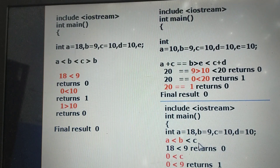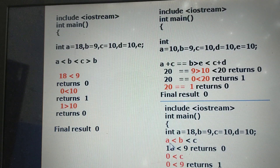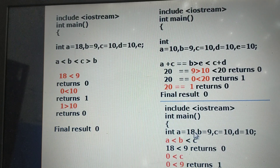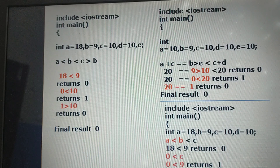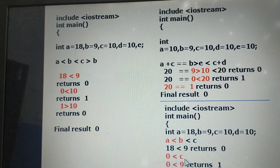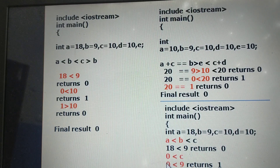Let us discuss one more program with relational operators: A < B < C. There are two relational operators. Value of A is 80, value of B is 90. Is 80 less than 90? No, it is false — return value is 0. Then check 0 < C: value of C is 10. Is 0 less than 10? Yes, it is true — return value is 1. The final result is 1.